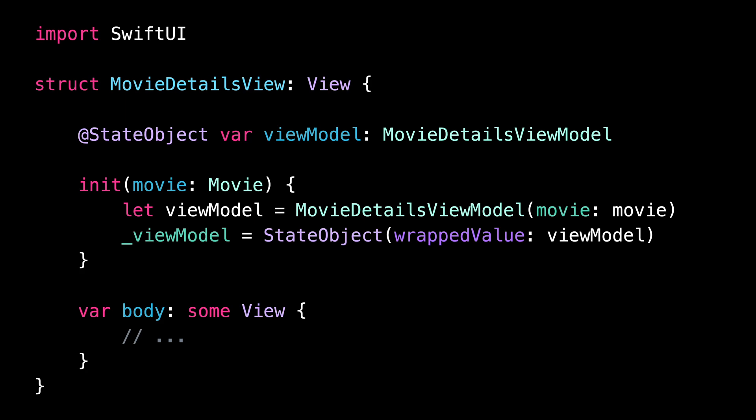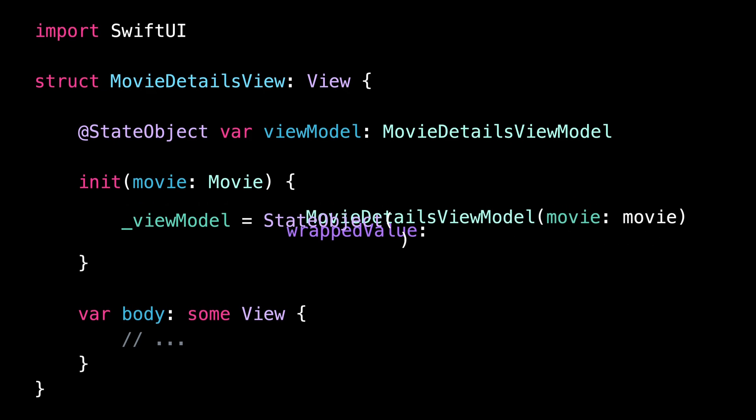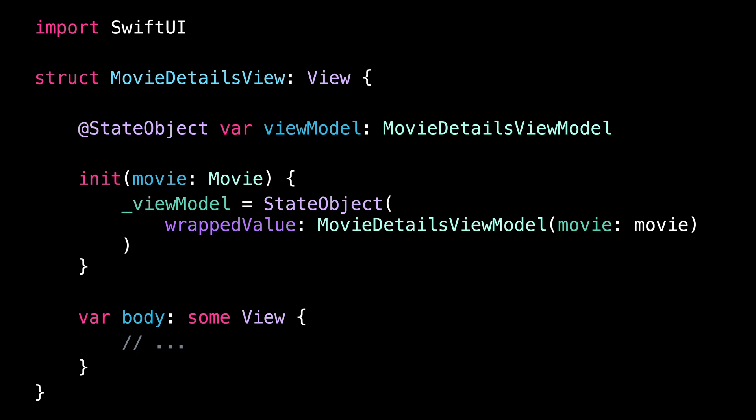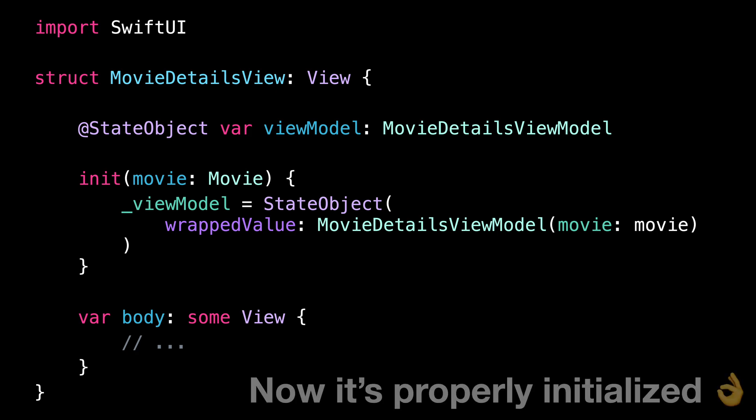So remember, whenever you need to instantiate a StateObject wrapper yourself, make sure that you pass the full initialization code as its argument.